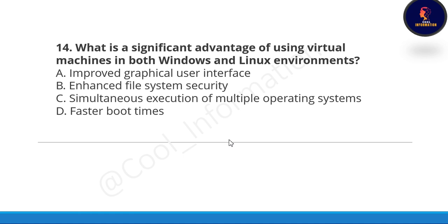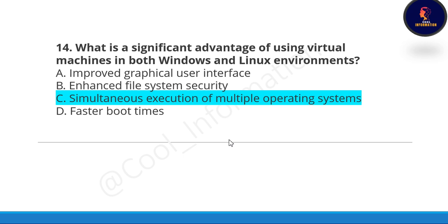Next question: What is the significant advantage of using a virtual machine in both Windows and Linux environments? Option A: improved graphical user interface, Option B: enhanced file system security, Option C: simultaneous execution of multiple operating systems, Option D: faster boot times. The correct option is Option C, simultaneous execution of multiple operating systems.